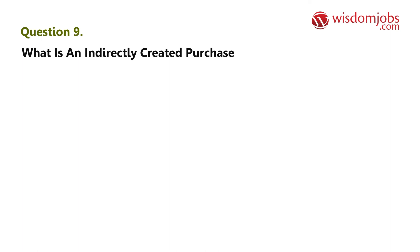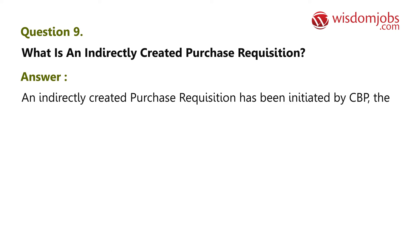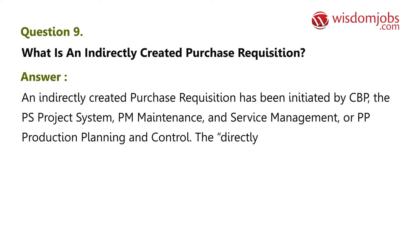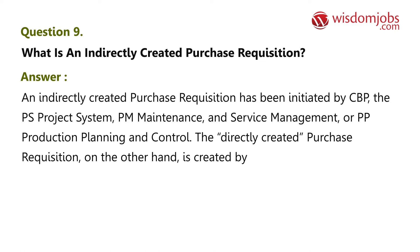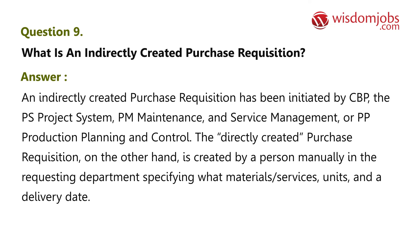Question 9: What is an indirectly created purchase requisition? Answer: An indirectly created purchase requisition has been initiated by CBP, the PS project system, PM maintenance and service management, or PP production planning and control. The directly created purchase requisition, on the other hand, is created manually by a person in the requesting department, specifying materials, services, units, and a delivery date.